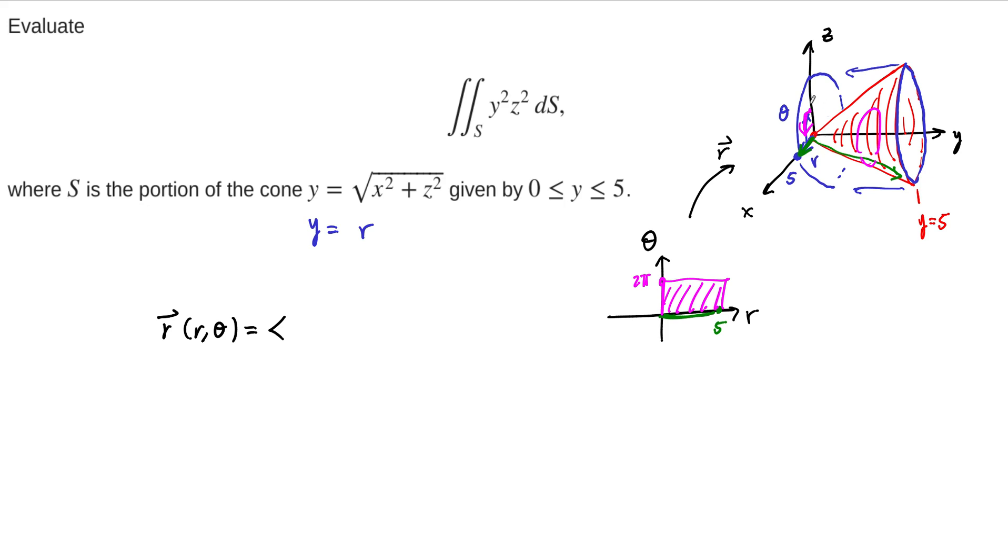So r with a hat as a function of r and theta as a vector function. The x direction is going to be—again, the orientation down here doesn't really matter, but if we go out this way first, then actually the x is r sine of theta. The y is just going to be r in cylindrical coordinates, and then the z is going to be r cosine of theta.